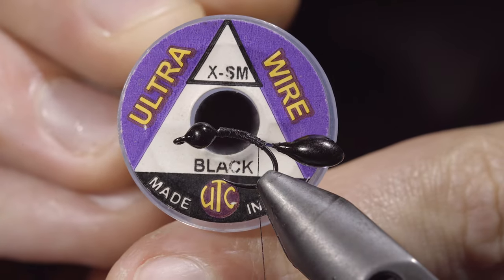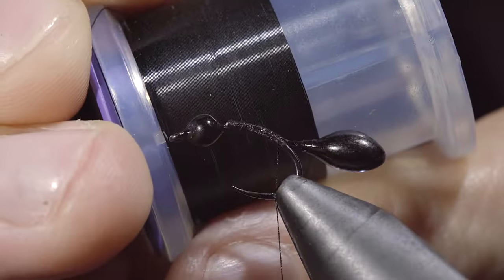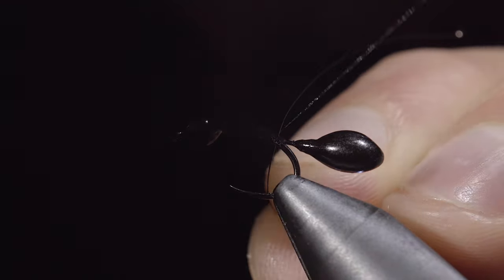Next, we'll grab some extra small wire, here I'm using black, and secure six legs to our abdomen.